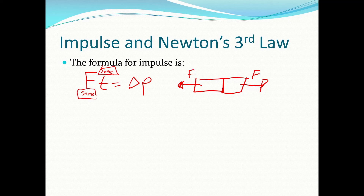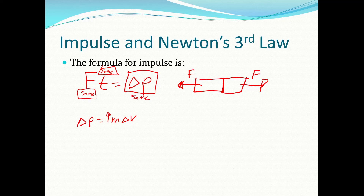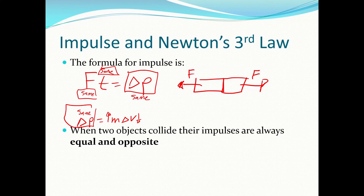If the time is the same and the force is the same for each object, the impulse acting on each object is going to be the same. A bigger mass will have a smaller velocity change, but it all works out so the impulse is always equal and opposite. When two objects collide, their impulses will always be equal and opposite, no matter how different their masses.